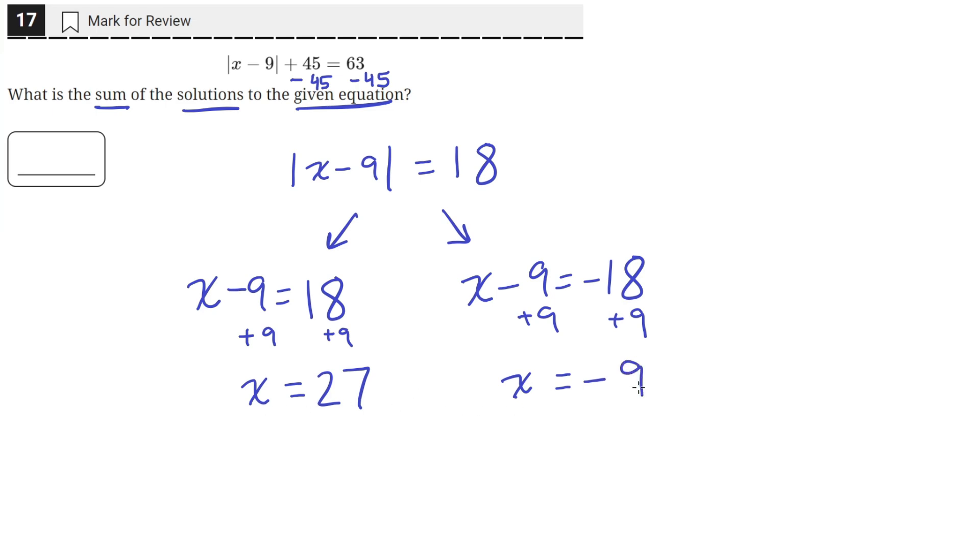So these are the two solutions and we can quickly check them by putting them in here. So 27 minus 9, that's equal to 18. And the absolute value of 18 is just 18. So 18 equals 18 and the equation is satisfied.